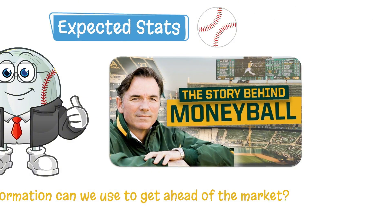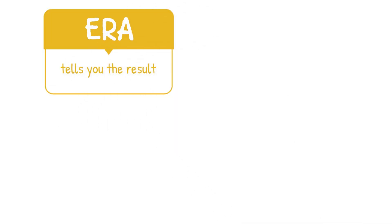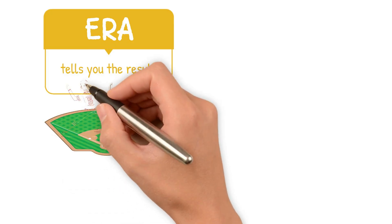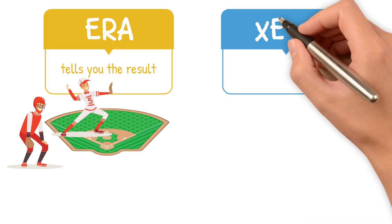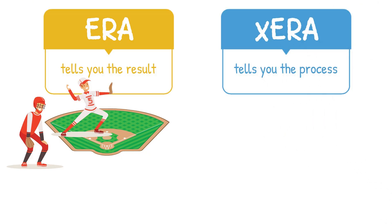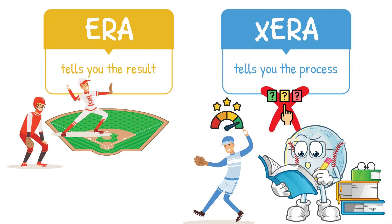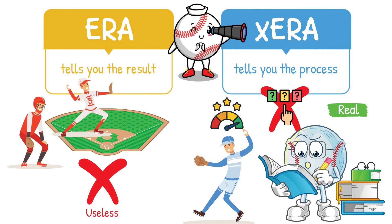So what did we learn today? ERA tells you the result, and it's heavily rooted in the environment a pitcher throws in and the defense behind him. xERA tells you the process — it removes the randomness and gives you a clearer read on how a pitcher is actually performing. It doesn't mean ERA is completely useless, but if you want to know what's real, you're going to need to look at something like expected ERA.